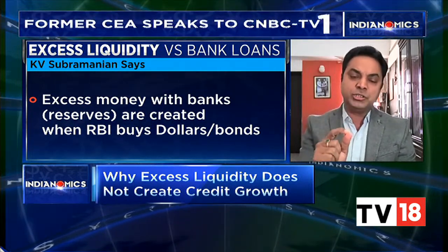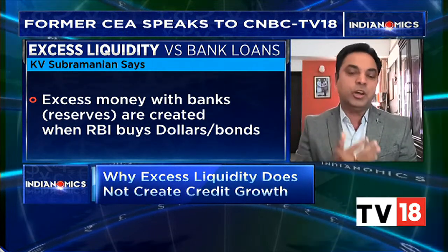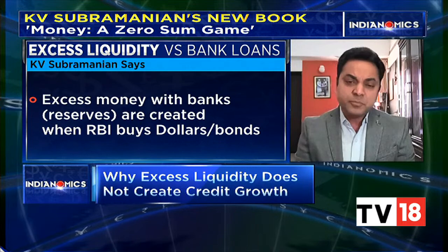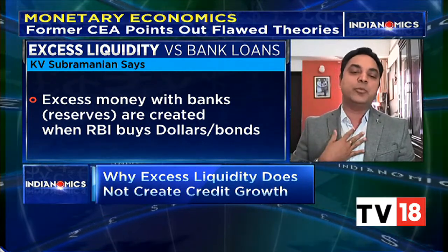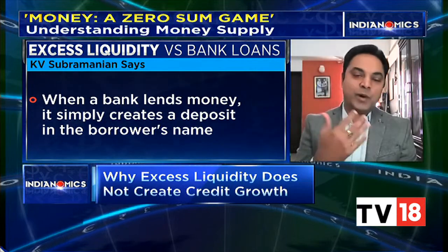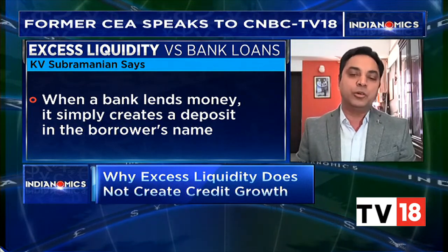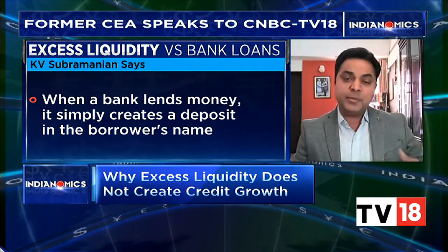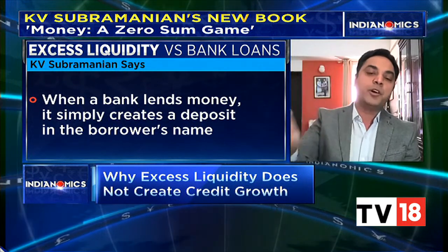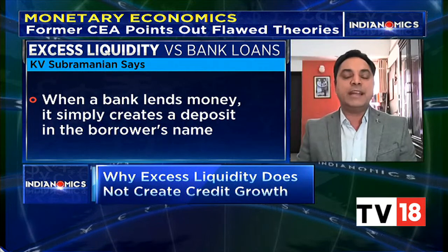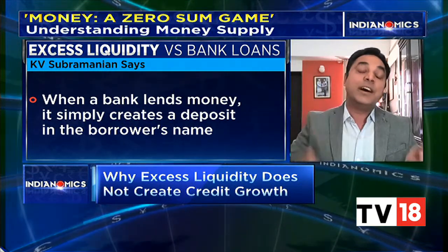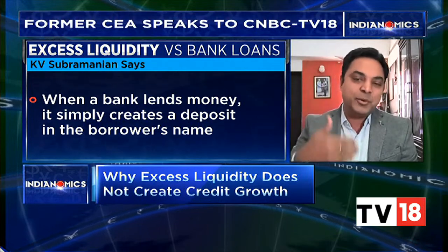Conceptually, the notion that reserves can substitute for loans should not depend on the number of banks in an economy. To understand this, suppose there are only two banks. Let's say I bank with State Bank of India and you bank with ICICI Bank. I approach ICICI Bank for a loan of 1 lakh. ICICI Bank credits that 1 lakh to my account — my deposit goes up by 1 lakh. I write a check to you, addressed to Lata Venkatesh, and you deposit it in State Bank of India. When the Reserve Bank nets out, it decreases the reserves of ICICI and increases the reserves of SBI, because you are the recipient of that money.